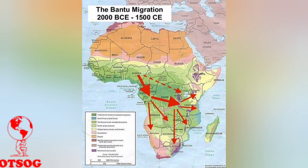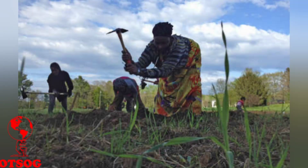The roots of the Bantu Expansion can be traced back to West Africa, where the Bantu people emerged. Archaeological evidence and linguistic connections suggest a distinctive cultural and linguistic unity among these communities. The early society was characterized by agriculture, with yams and oil palms playing a crucial role in sustaining their communities.